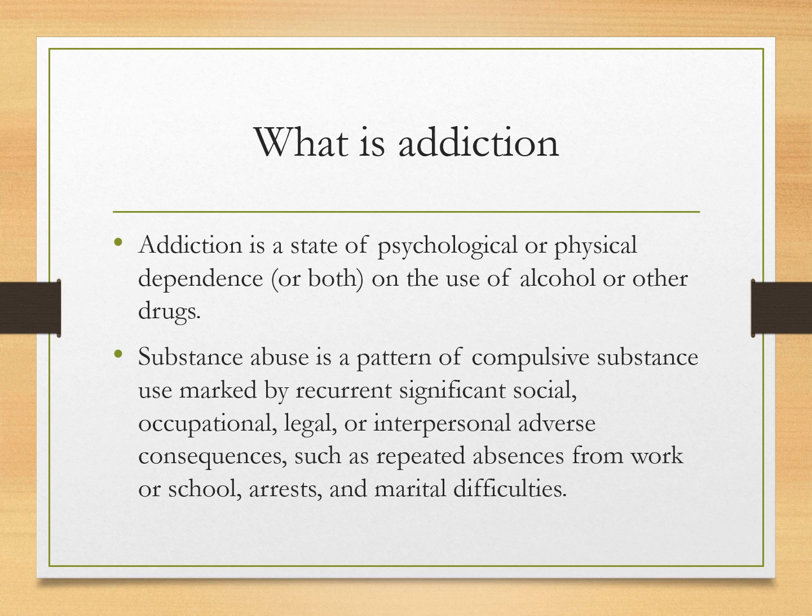If there is alcohol use just once or twice socially, we don't call it addiction. There should be social and occupational impairment also — absences from work, absences from school, marital difficulties, or sometimes physical and medical problems arising. When there are problems arising, then we say there is an abuse or an addiction problem.